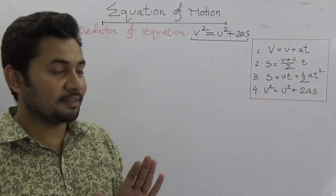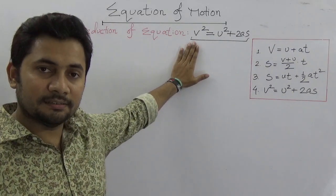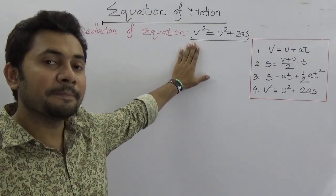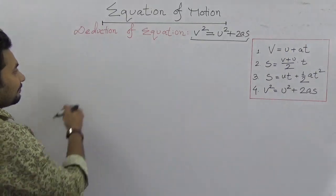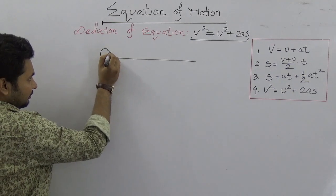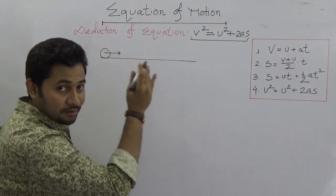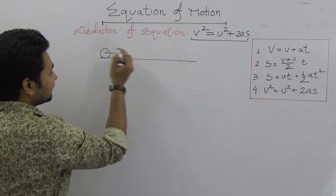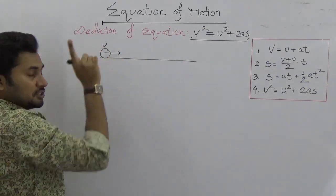To understand the deduction process, we need to think of a scenario similar to before: something is moving from here to here with uniform velocity—sorry, initial velocity u—and comes here with a final velocity v over the time period, and there is acceleration.